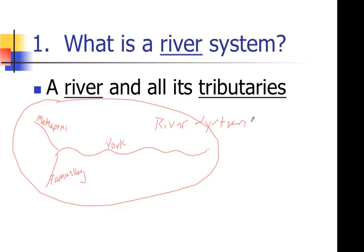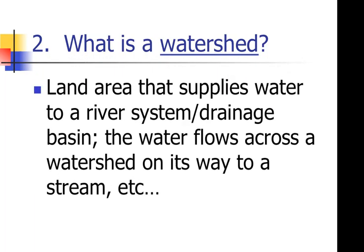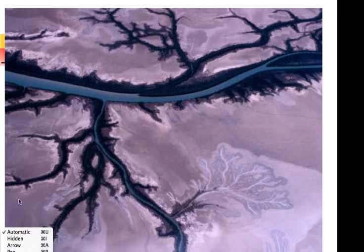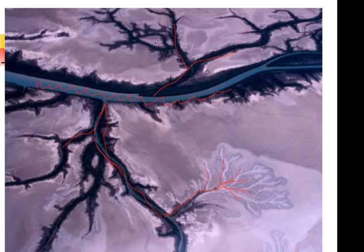Before moving to number two, I want to show you an aerial view of a real river system. In the center is the main river, and all these other rivers feeding into it are called tributaries. You can see one tributary that's dried up a bit — it must not have rained recently — but when it does rain, that fills up quickly and flows right into the main river. All of this together is called a river system.